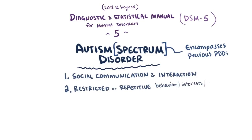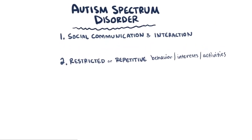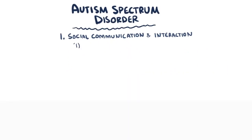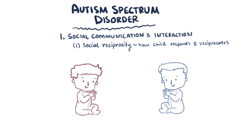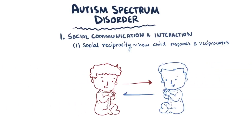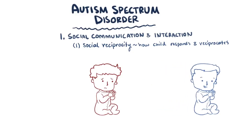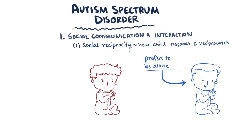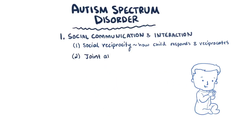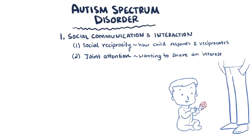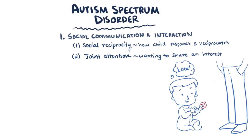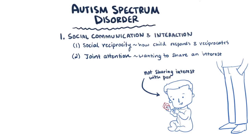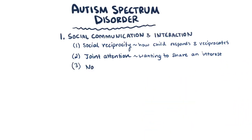For the social and communication areas, there are four subcategories that clinicians look for deficiencies in. The first is social reciprocity, which refers to how children respond or reciprocate in social interactions — for example, being alone and not taking a role in social games. A second area of potential deficiency is joint attention, which is the state of wanting to share an interest with someone else, like 'hey, check out this awesome thing I found.' An impairment here might be a child not sharing their interest or amusement in an object with their parents.